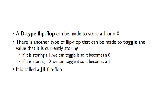A D-type flip-flop can be made to store a 1 or a 0. There's also another type of flip-flop that can be made to toggle the value that it's currently storing. So if it's storing a 1, we can toggle it so the 1 becomes a 0, and if it's storing a 0, we can toggle it so it becomes a 1. This is called a J-K flip-flop.